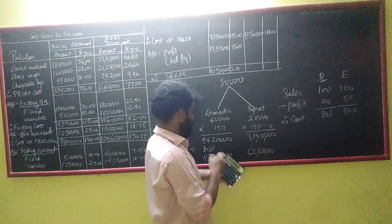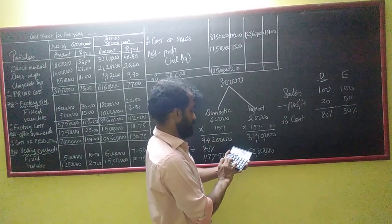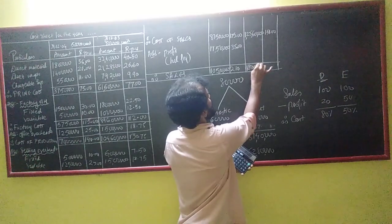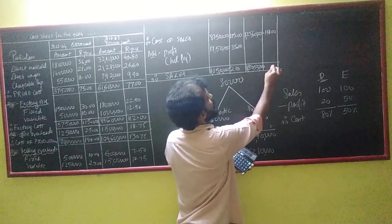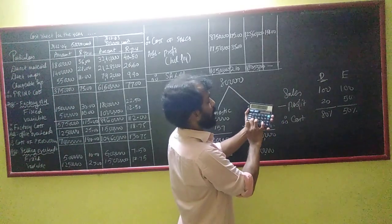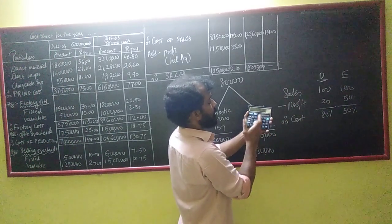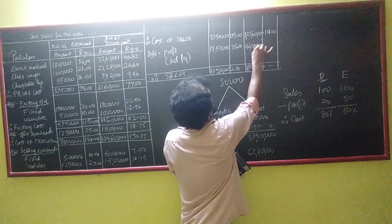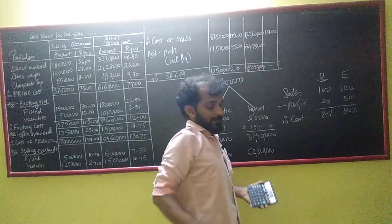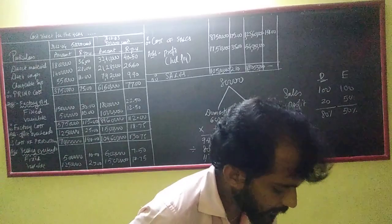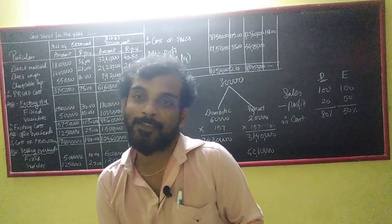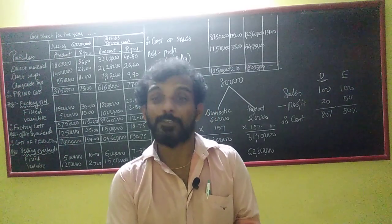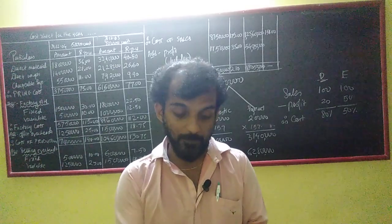I will now add domestic and export sales: 1,17,75,000 plus 62,80,000 gives total sales of 1,80,55,000. Minus total cost of 1,25,60,000, profit comes to approximately 54,95,000. The sum is quite long but I hope it was clear.